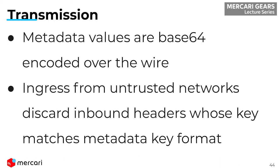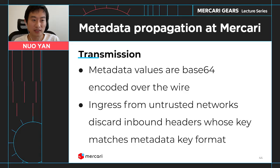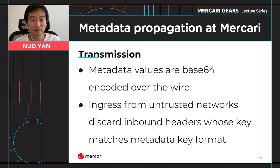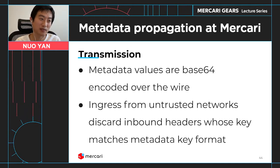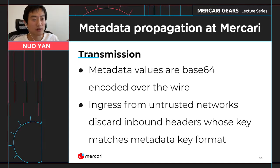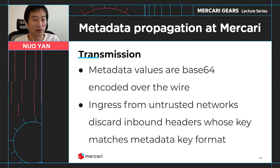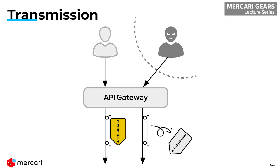Since metadata values could be in protobuf, string, or other sensible formats, we standardize by requiring all metadata values to be base64 encoded when sent over the wire. We do this because sometimes it could be binary data, not necessarily a string-serialized format. Also, the ingress from untrusted networks will discard inbound metadata headers. For example, if a hacker guessed our metadata format key and used it correctly when sending a request to the gateway to try to change behaviors, our ingress will drop those headers and it will have no impact on the system.